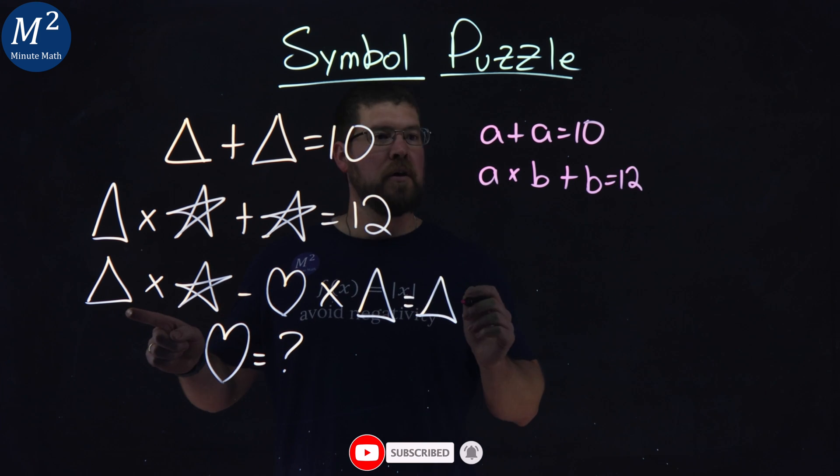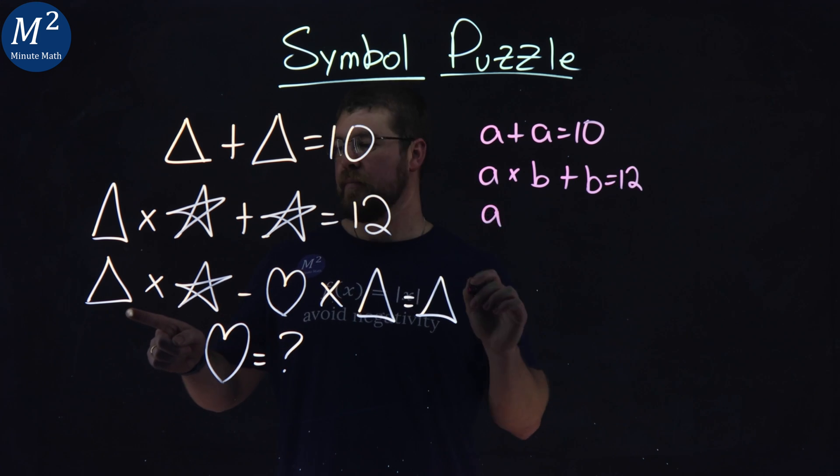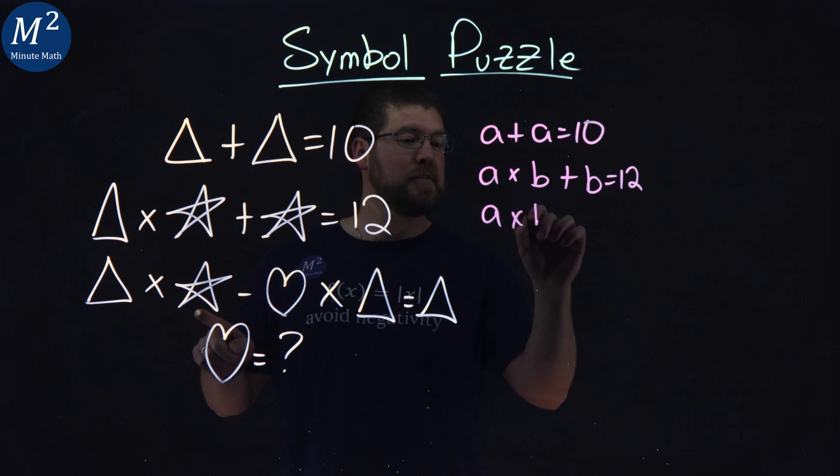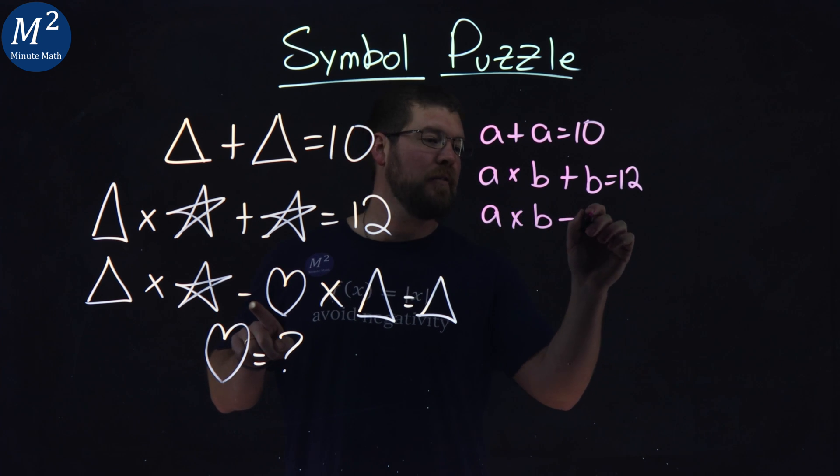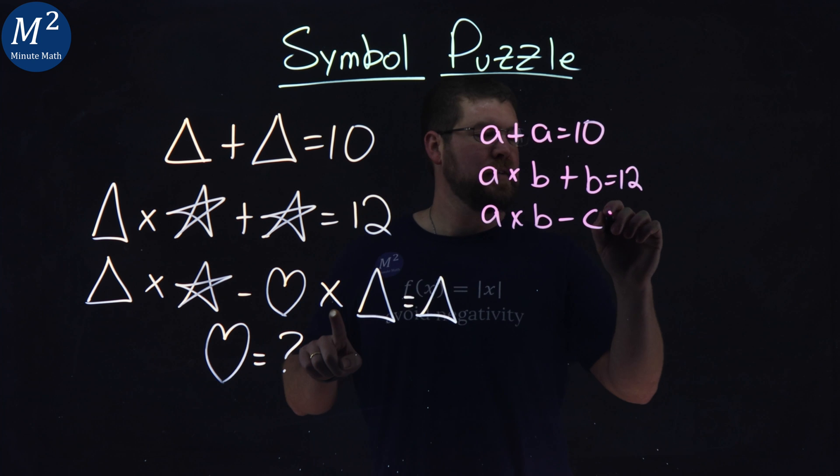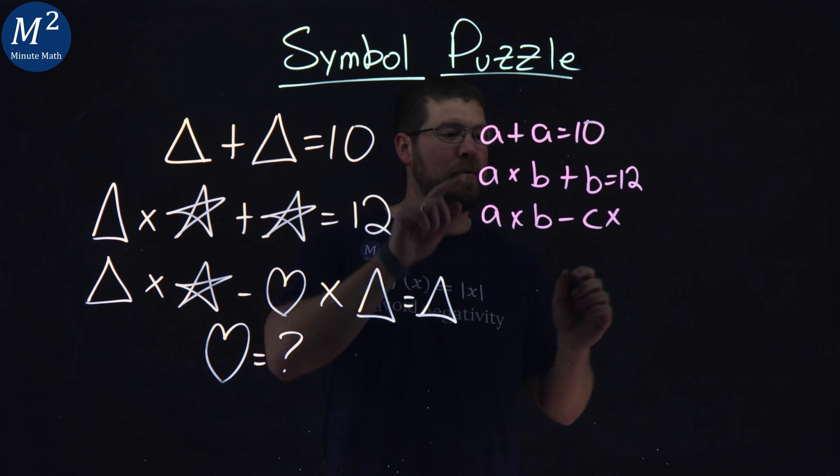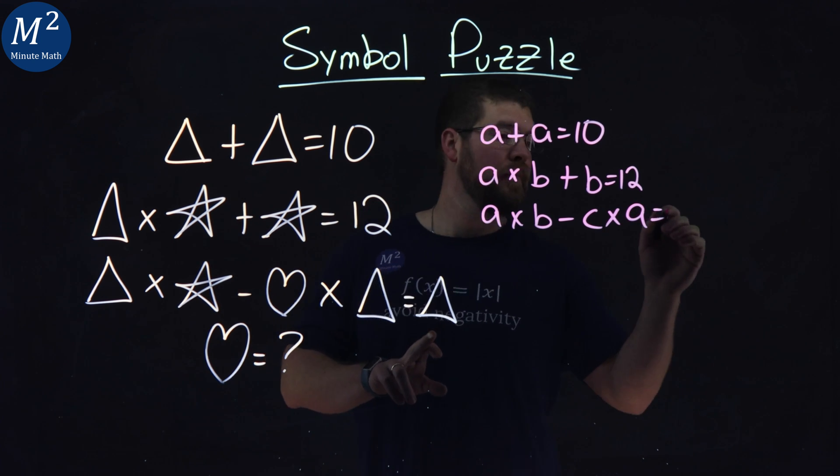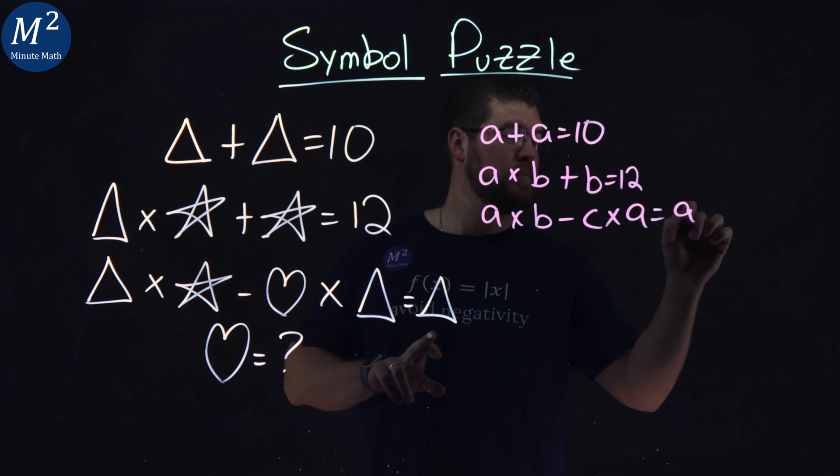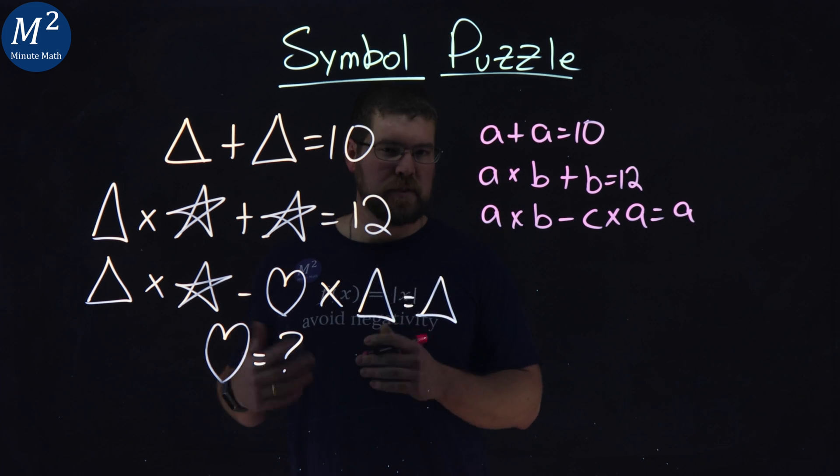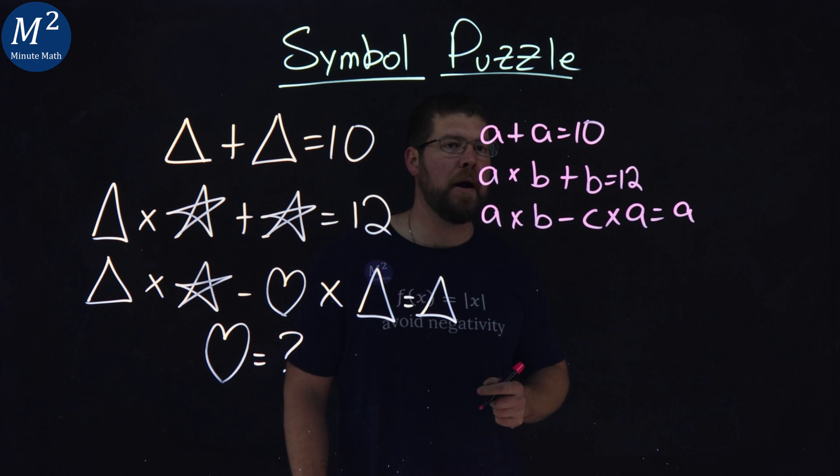Triangle A times star B minus heart C times triangle A equals A. C is our heart, which we're going to find at the end.